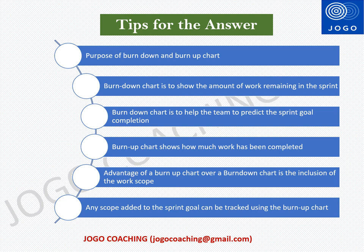Burndown chart helps the team to predict the sprint goal completion based on the current progress. Burn up chart shows how much work has been completed and the total scope of the project. The advantage of using the burn up chart over the burndown chart is the inclusion of the work scope — any scope added to the sprint goal can be tracked using the burn up chart. Burndown chart gives detailed information; burn up chart gives high-level information. Burndown chart tells how much work is left; burn up chart tells how much work is done.